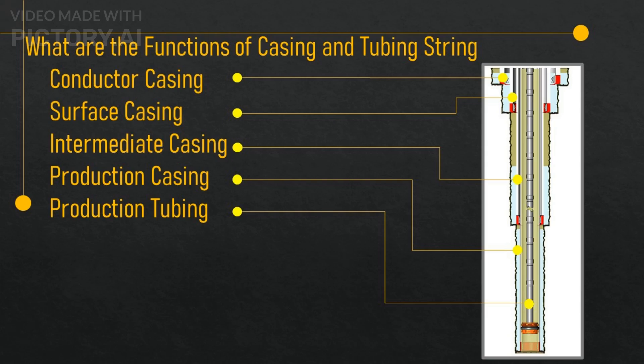Tubing string: this is the only tubing string that is installed in the well, and it is usually hung inside the production casing string. The tubing string serves as a smaller and more efficient conduit for the production fluids from the reservoir to the surface, and it also allows for the installation of artificial lift devices, such as pumps or gas lift valves, to enhance the flow of fluids. The tubing string may have a diameter of 2 to 5 inches and a length of 10,000 to 20,000 feet.